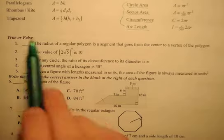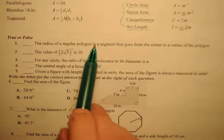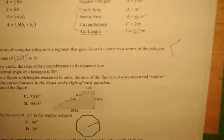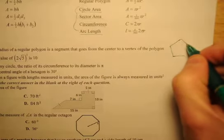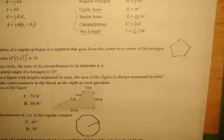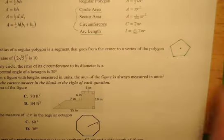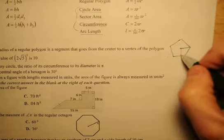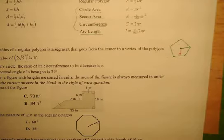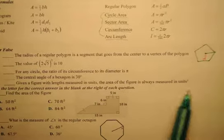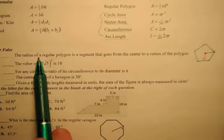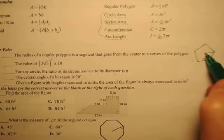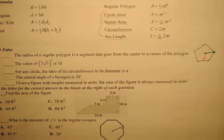The first question is true or false: the radius of a regular polygon. Well, let's draw that. If I were to draw a regular polygon over here, the green line would be a radius and the red line would be an apothem. All right, so let's see if this is describing a radius.